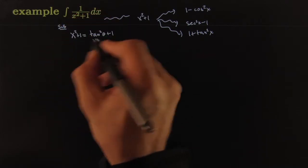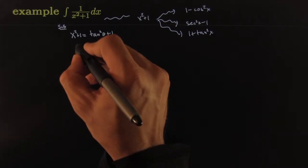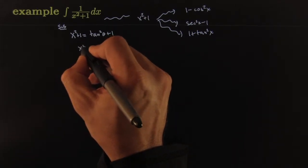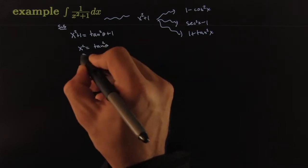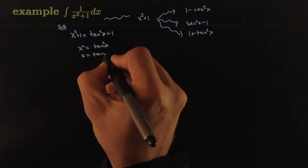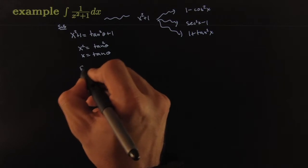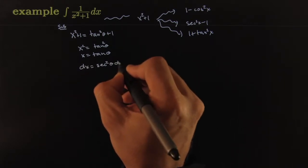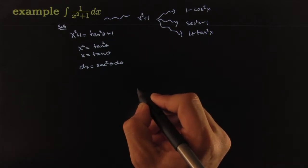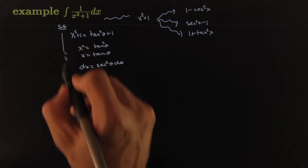If that's the case, you have to solve for x so you can get your differentials. x squared equals tangent squared theta, x equals tangent theta. So then the differential of x is equal to secant squared theta d theta. This completes your dictionary.